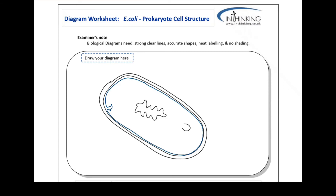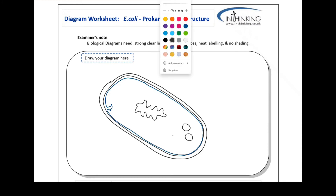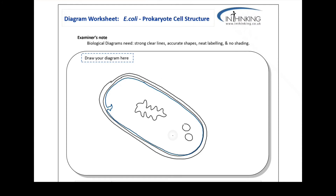There are also other pieces of DNA called plasmids found in prokaryote cells. Next, draw some ribosomes in the cytoplasm. They're quite small but make them clearly visible and not just tiny dots that look like shading — they must look like a structure.